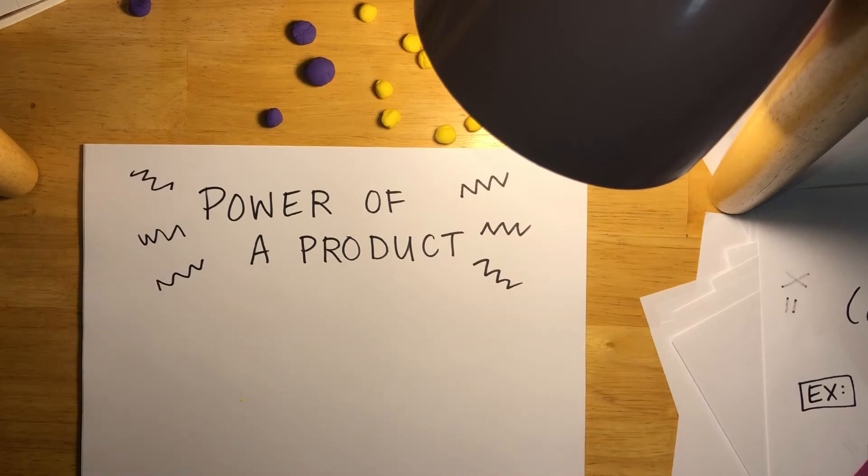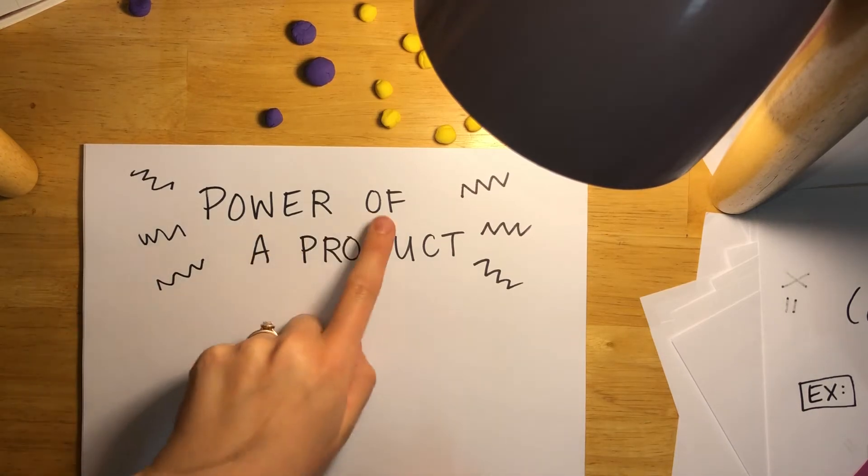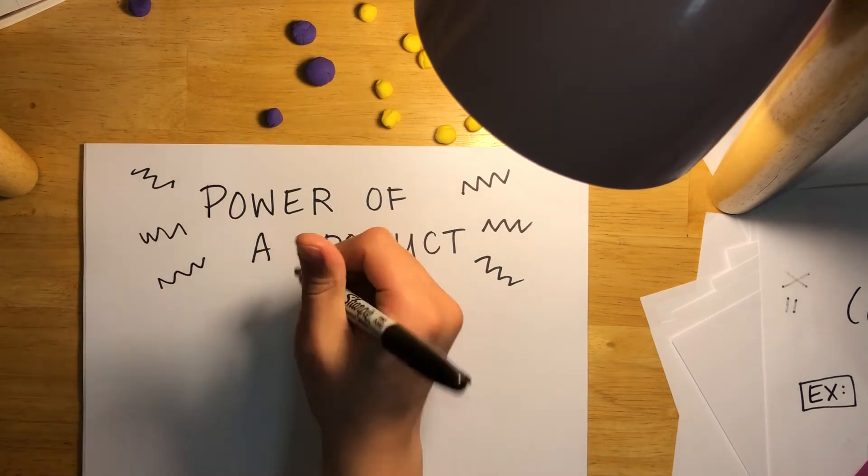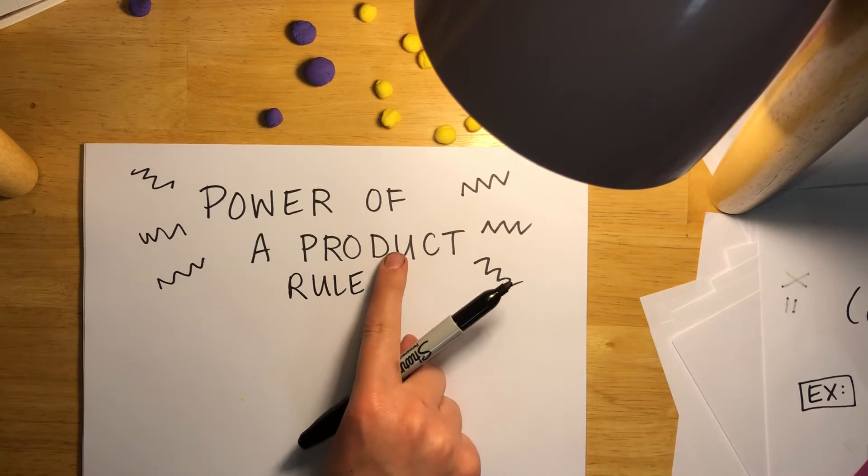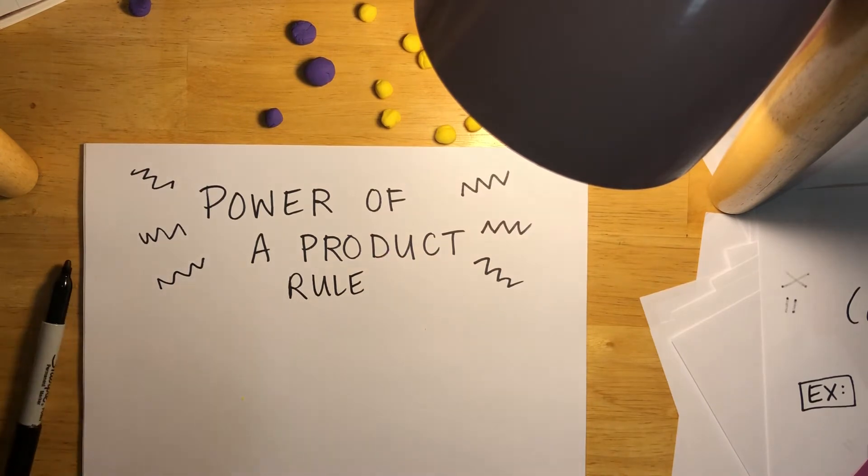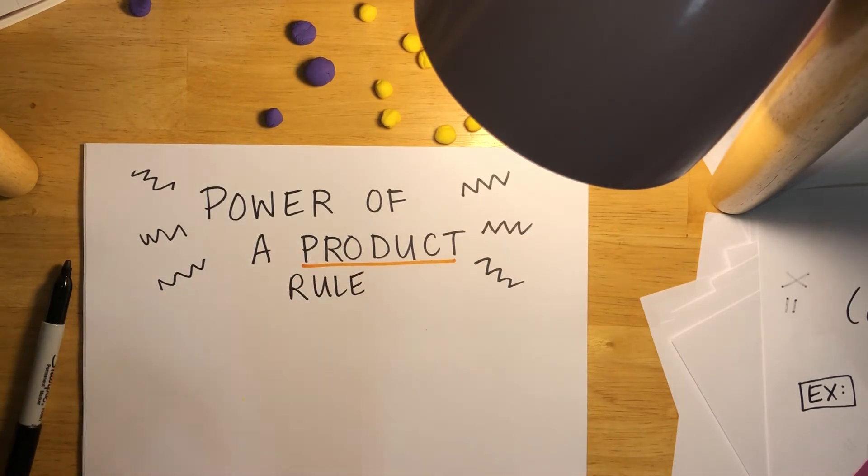So, the last topic that we're going to talk about is the power of a product rule. This is where we're going to have two things that are being multiplied together. Remember that word product means multiplication.